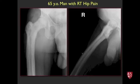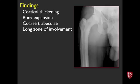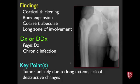Next case, 65-year-old man with right hip pain. We see cortical thickening along the femur — very thick cortex, probably overall expanded — coarse trabeculae, and a long zone of involvement covering almost the whole bone shown. Paget disease is the top diagnosis; potentially chronic infection as well. A tumor would be unlikely given the extremely long extent of involvement, and there's no destructive change suggesting a definitely aggressive lesion.